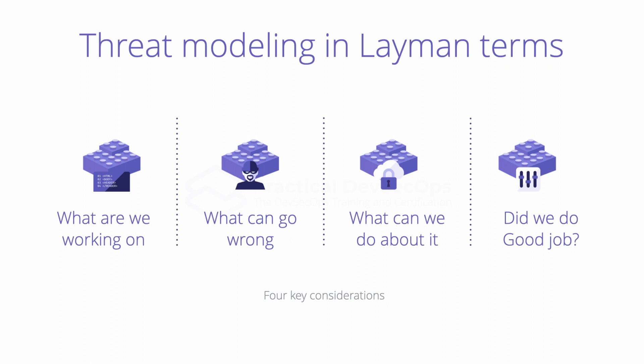For example, how likely is an attack supposed to happen and what would be the impact if such an attack happens? Finally, discuss and decide what you will do about each risk. Now you might have noticed that we started talking about risks instead of threats — every threat essentially possesses a certain risk.